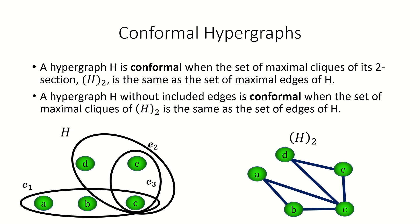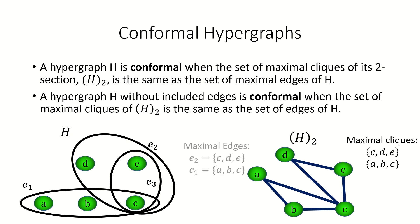In the example shown here, if we list out the maximal cliques of the two-section and then list out the maximal by inclusion edges of our hypergraph, you'll see that the two lists are the same, meaning the hypergraph shown here is a conformal hypergraph.